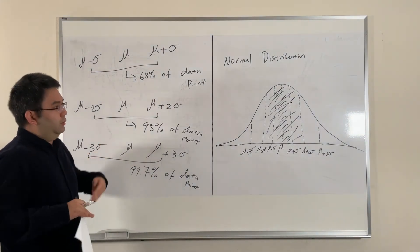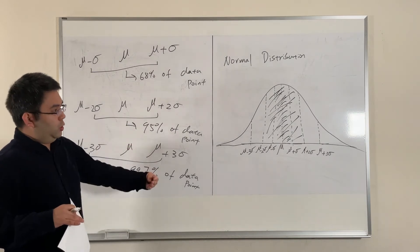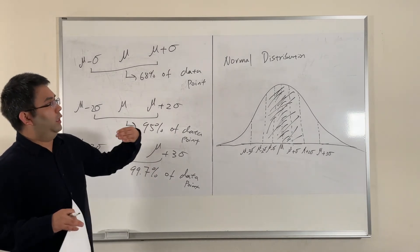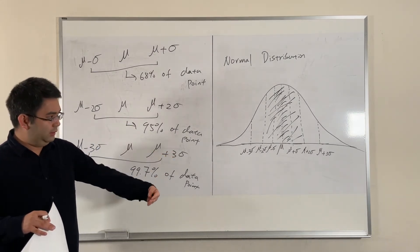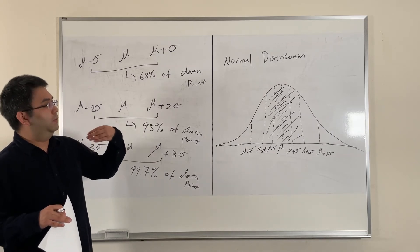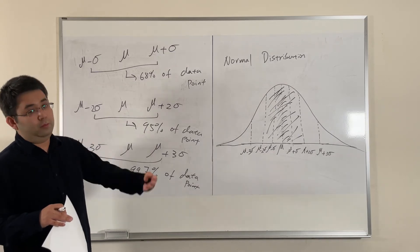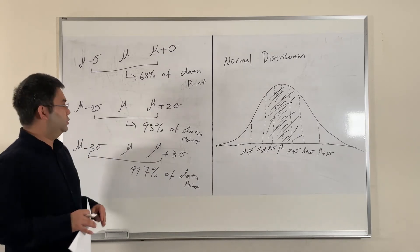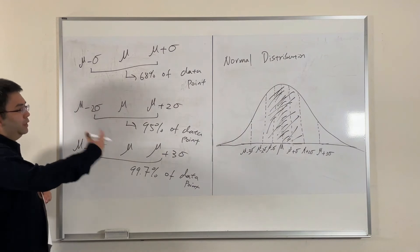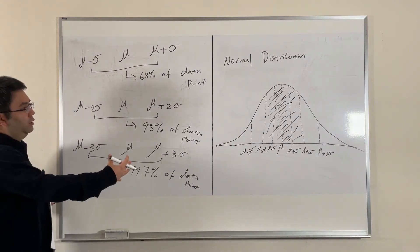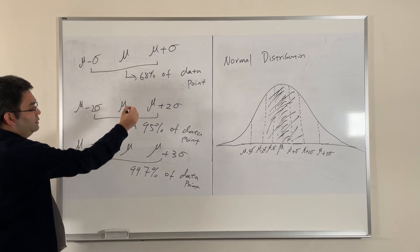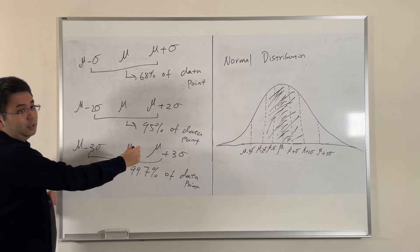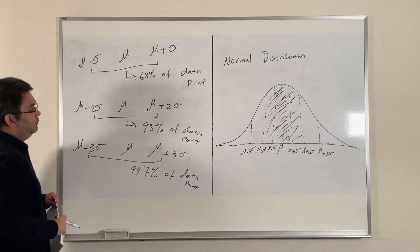So at this point, I've shown you how a normal distribution looks and the rule of thumb. You'll be able to tell how much of the data you're covering by looking at how many standard deviations away from the mean you go.